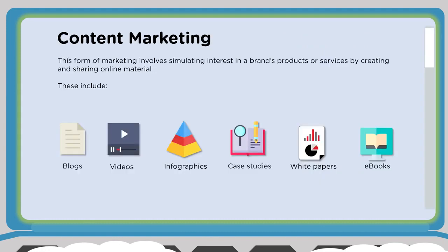Let's move from search engine optimization to content marketing. Content marketing is a form of marketing that involves stimulating interest in a brand's products or services by creating and sharing online material. That online material can come in many forms: blogs, videos, infographics, case studies, white papers, and eBooks. A blog can be part of your website, a video could be uploaded to YouTube, an infographic could be shared on LinkedIn — all these assets can be integrated, shared, and commented on.